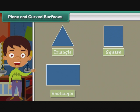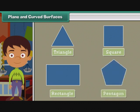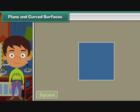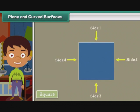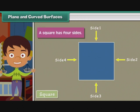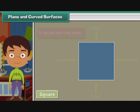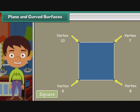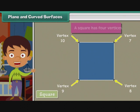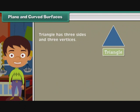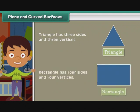Look at this square. Arrows one, two, three, four indicate the sides of a square. A square has four sides. The point at which two sides meet is called a vertex. Arrows indicate the vertices of a square. So here we see a square has four vertices. Similarly, triangle has three sides and three vertices. Rectangle has four sides and four vertices.